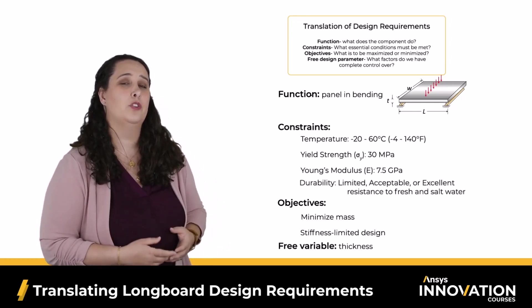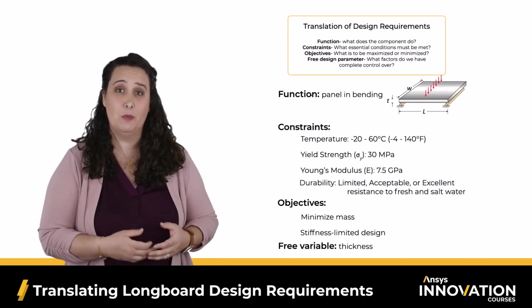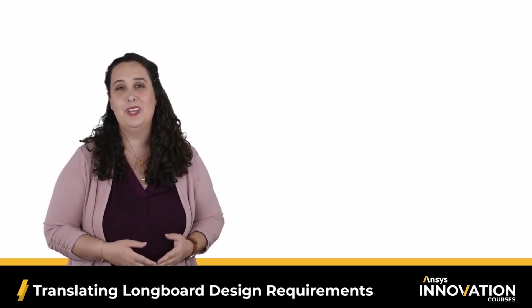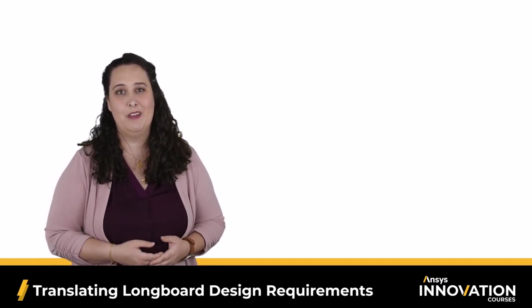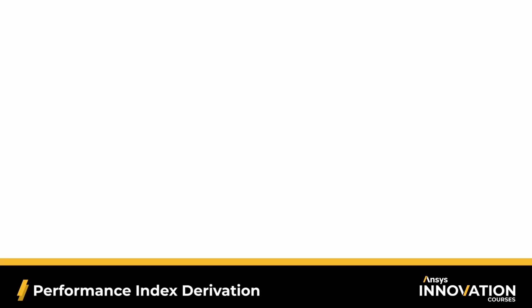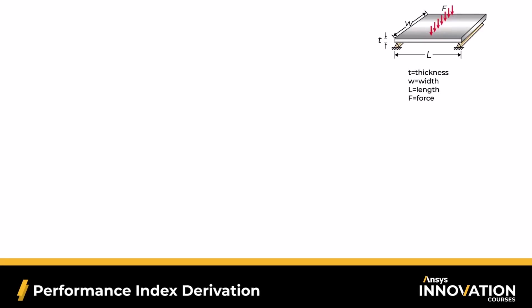With that, we've completed our translation step and can now identify our performance index. For one last example, I'll derive it here rather than just looking it up. Our longboard deck is a panel in bending — a rectangular prism with width w, thickness t, length l, and some applied force f in the middle. We care about the weight, giving us the equation: mass equals w times t times l times rho. We have a stiffness-limited design, where stiffness S equals force f over deflection delta.